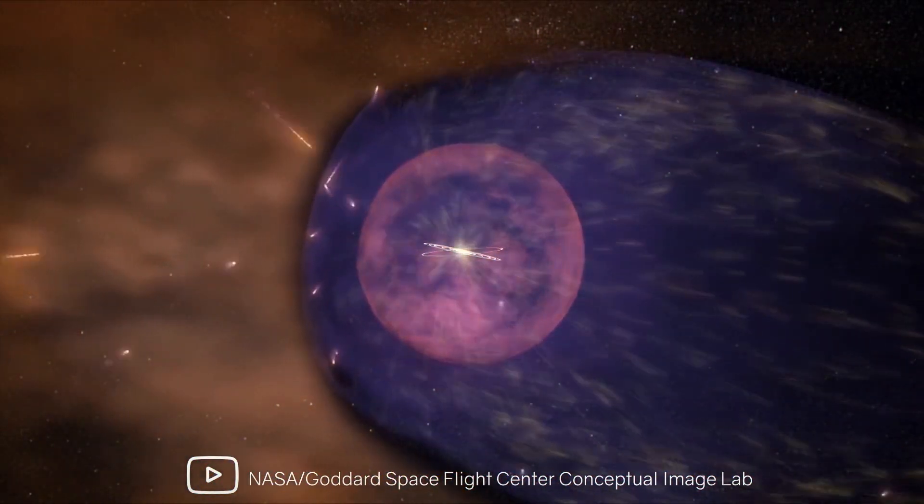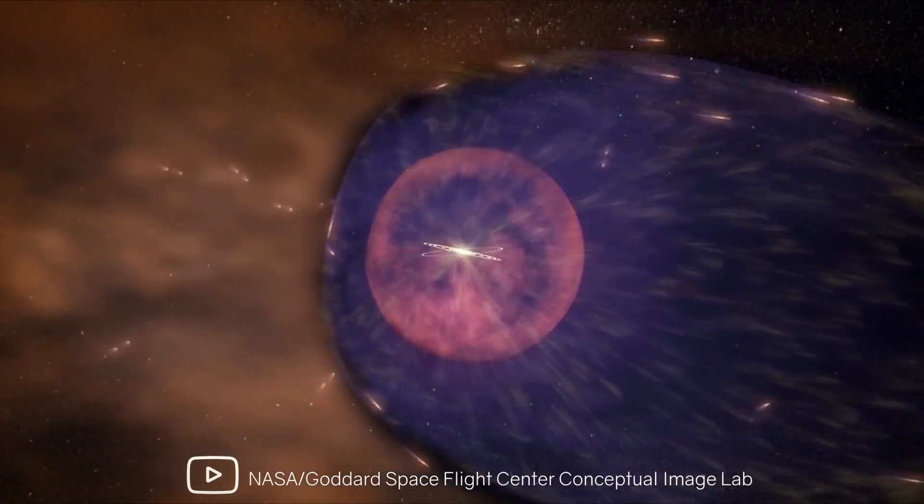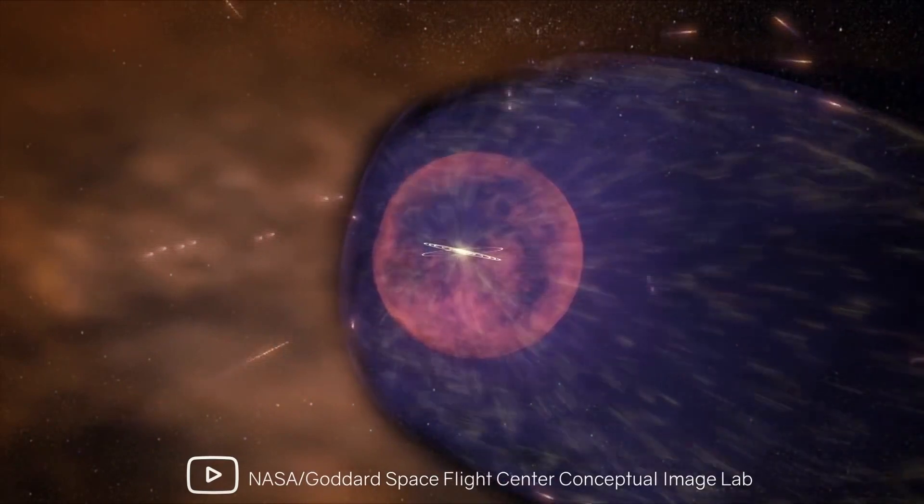Our galaxy, the Milky Way, has long been known to have the shape of a spiral disk. Several spirals radiate from its center, known as arms by astronomers.